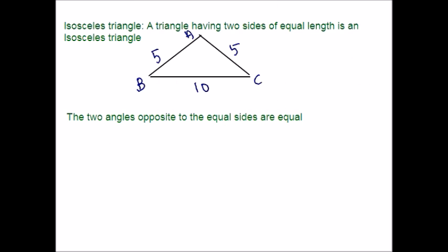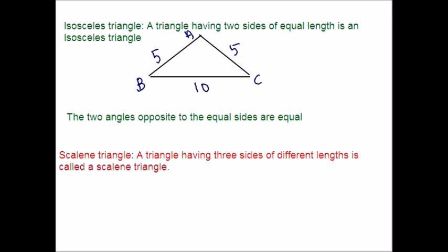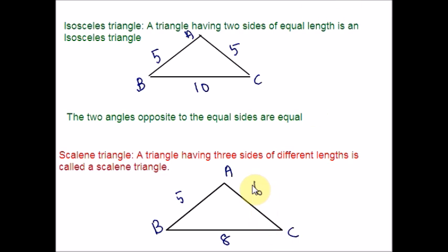Now let me show you the third type. The third type is scalene triangle. A triangle that has all three sides with different lengths is considered a scalene triangle. For example, AB is equal to 5, AC is equal to 6, and BC is equal to 8. All the measurements are different, so that triangle is considered a scalene triangle.